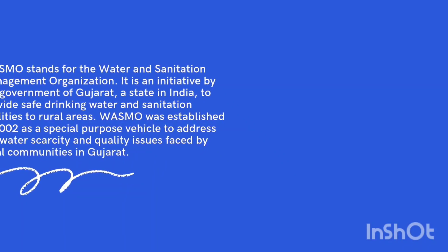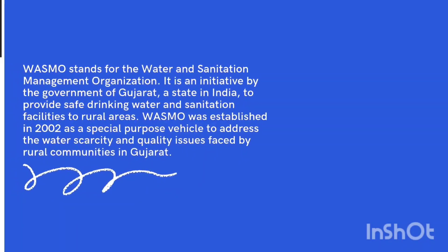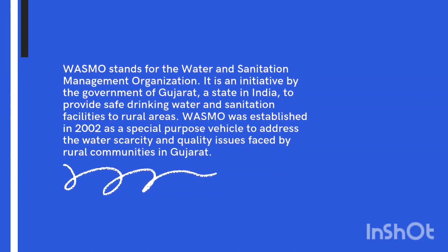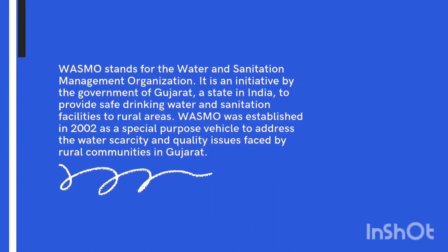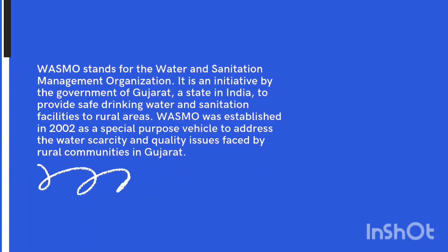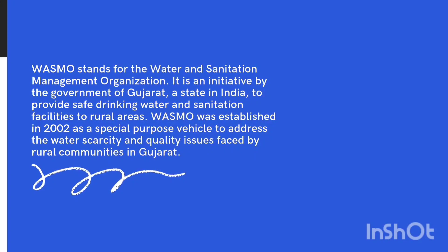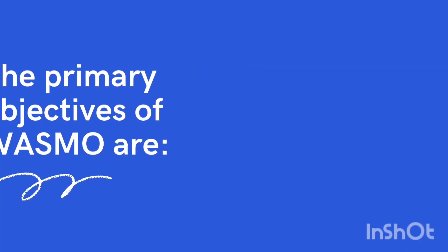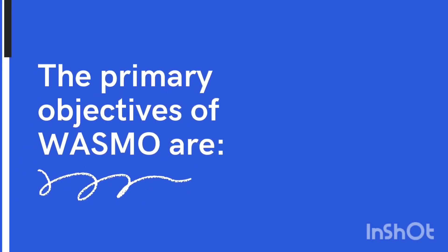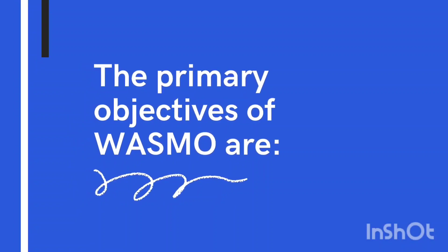WASMO stands for the Water and Sanitation Management Organization. It is an initiative by the government of Gujarat, a state in India, to provide safe drinking water and sanitation facilities to rural areas. WASMO was established in 2002 as a special-purpose vehicle to address the water scarcity and quality issues faced by rural communities in Gujarat.